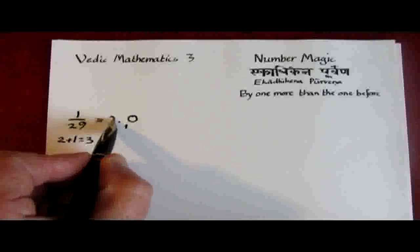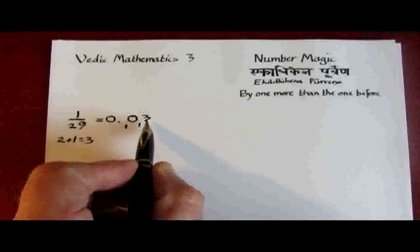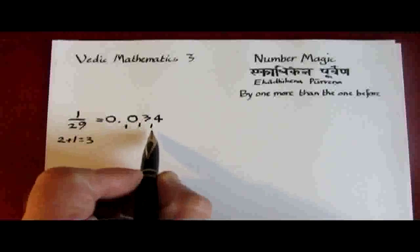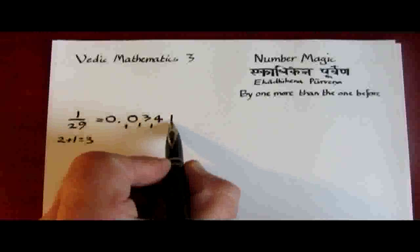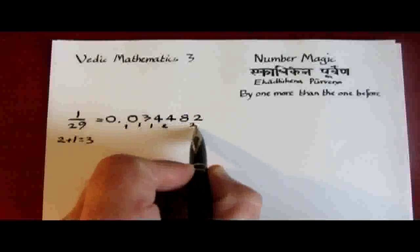And then we continue dividing by 3. 3 into 10 goes 3, remainder 1. 3 into 13 goes 4, remainder 1. 3 into 14 goes 4, remainder 2. 3 into 24 goes 8, and then 2, remainder 2.